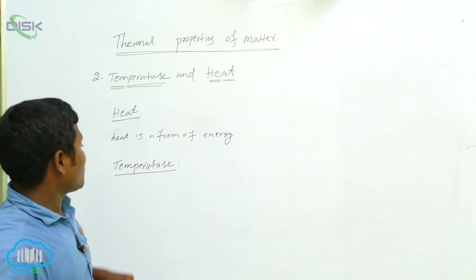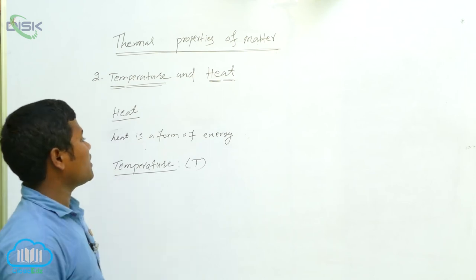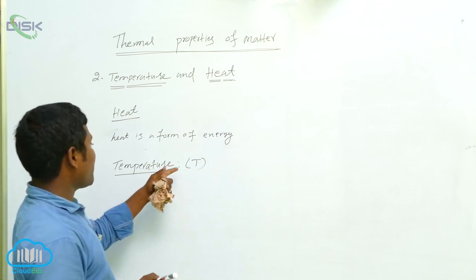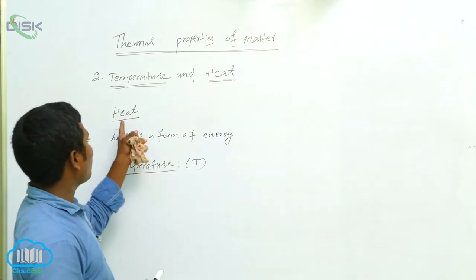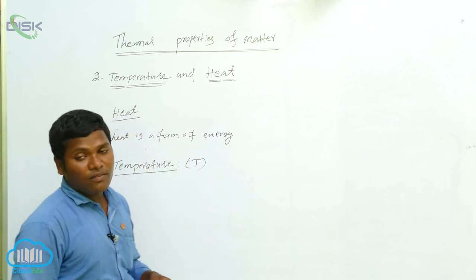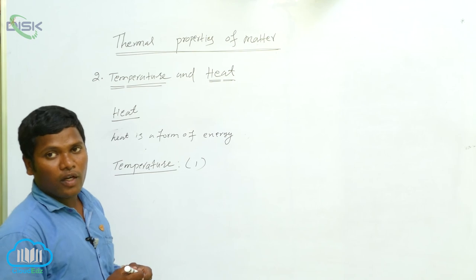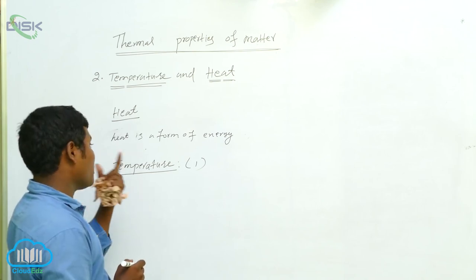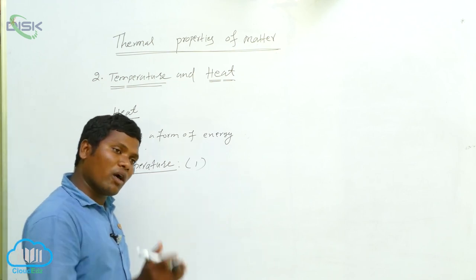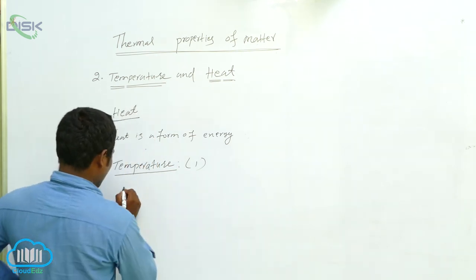Temperature is denoted by T. Heat is measured using a calorimeter. Temperature is measured using a thermometer. Those instruments I will explain. The definition of temperature — if you know about heat, then we can define temperature as: how much hotness the body has. The degree of hotness or coldness — that is called temperature.